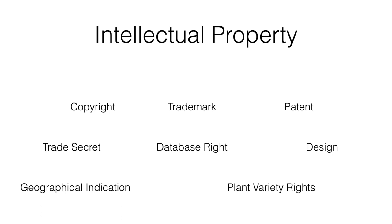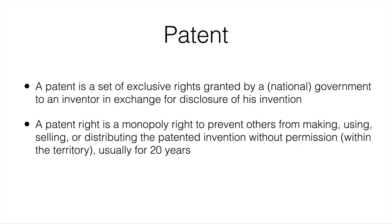Copyright, trademarks, and patents are probably the three most important types. We're going to look at patents and see how they work and what the justification for them is. A patent is a set of exclusive rights granted by a national government to an inventor in exchange for the disclosure of his invention. A patent right is a monopoly right to prevent others from making, using, selling, or distributing the patented invention without permission within that territory. It is usually granted for 20 years.